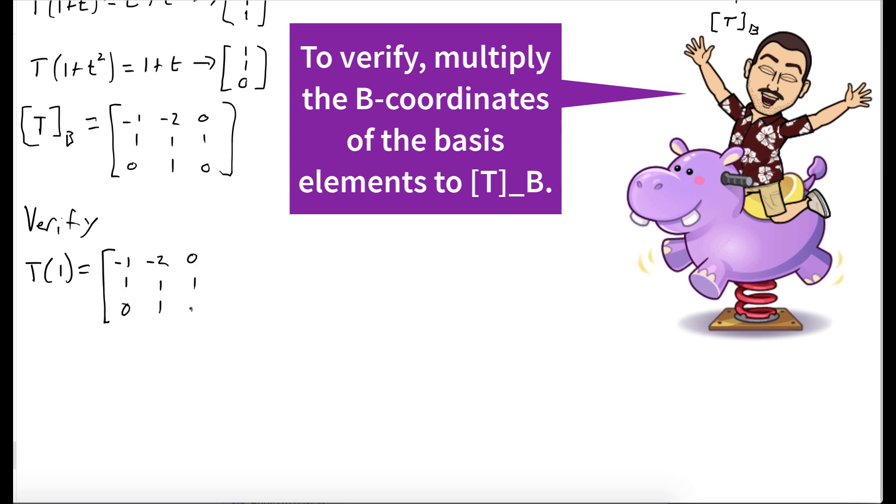So the B-coordinates for the polynomial 1 is just the vector [1, 0, 0]. When we multiply it out, we get -1 + 1 + t, which is t, which is exactly what we wanted.